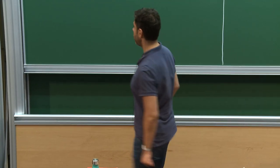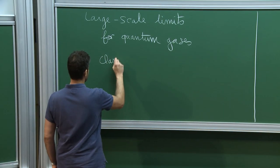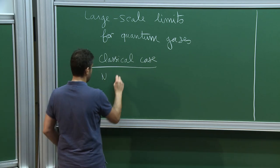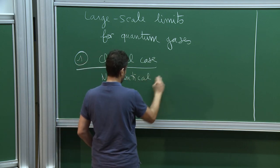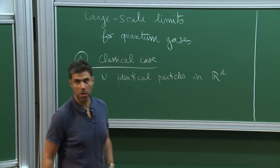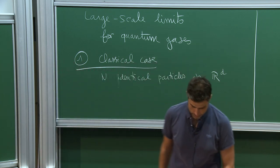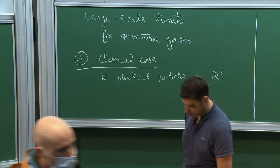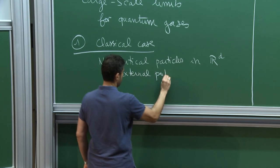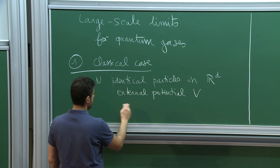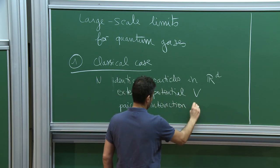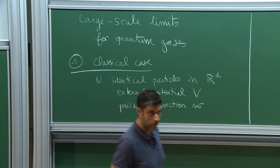In order to fix notation, it's probably better to start with the classical case. We will consider N identical particles in R^d, evolving in R^d. Maybe they will eventually be confined to a domain, but this I will hide in the external potential. There will be an external potential V, as well as a pairwise interaction W. I am deciding that the particles only interact by pairs.